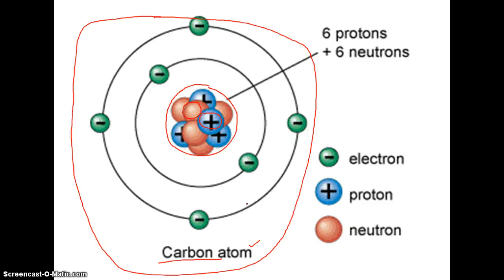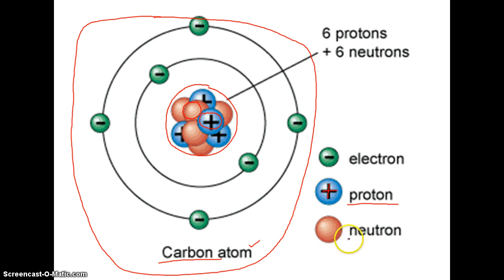Inside the nucleus we find two of our three subatomic particles — 'sub' meaning below or less than, 'atomic' meaning an atom. There are two subatomic particles in the nucleus. Those two are protons, which are subatomic particles found in the nucleus that have a positive charge — which is why they have that plus sign. The other subatomic particle found in the nucleus is called a neutron. So we have protons and neutrons together in this central nucleus.